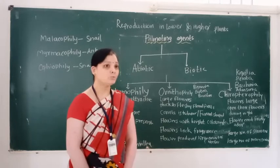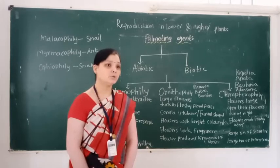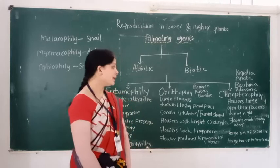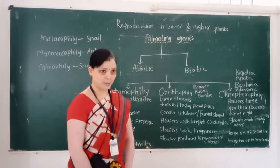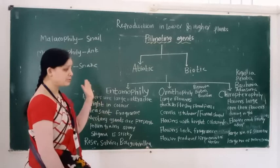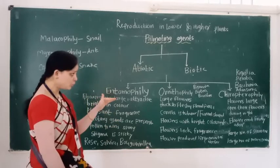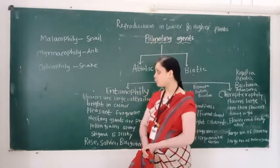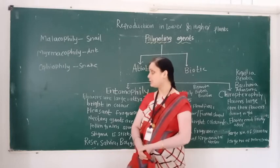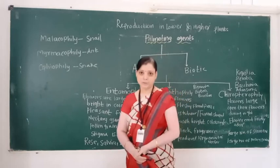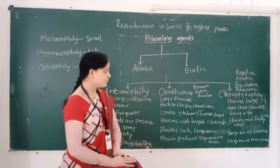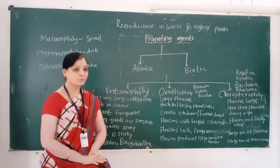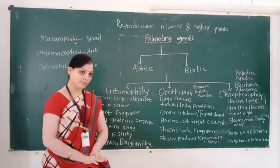In this video we learned about pollinating agents and their role, and the floral adaptive characters that take place in entomophily, ornithophily, and chiropterophily, along with their examples. Snail pollination is called malacophily. In the next video we will see the various types of outbreeding devices. Thank you.